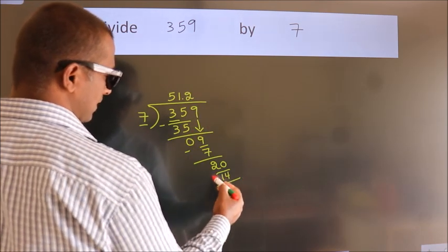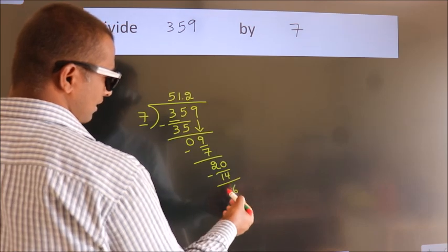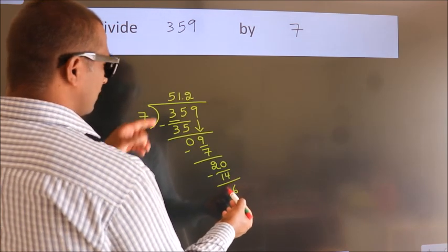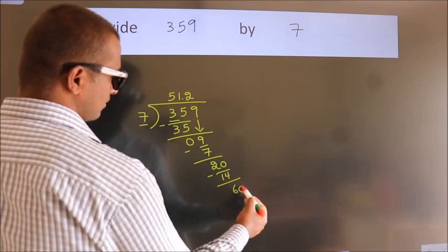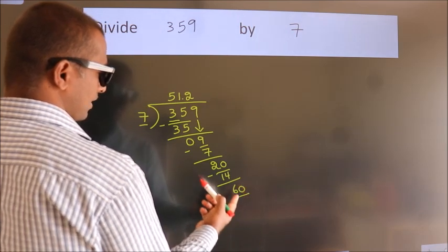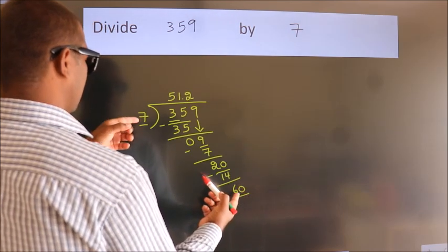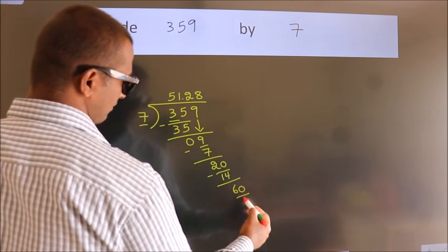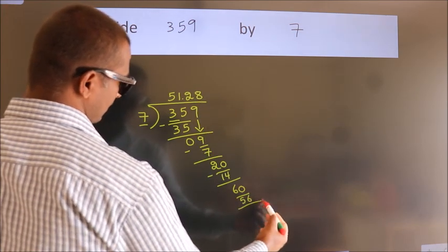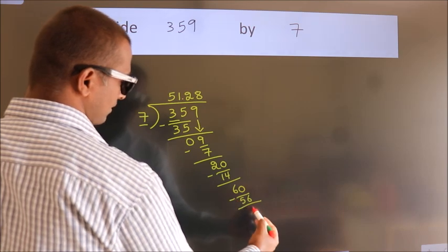Now we subtract. We get 6. After this, we already have the decimal, so directly take 0. So 60. A number close to 60 in the 7 table is 7 eights, 56. Now we subtract. We get 4.